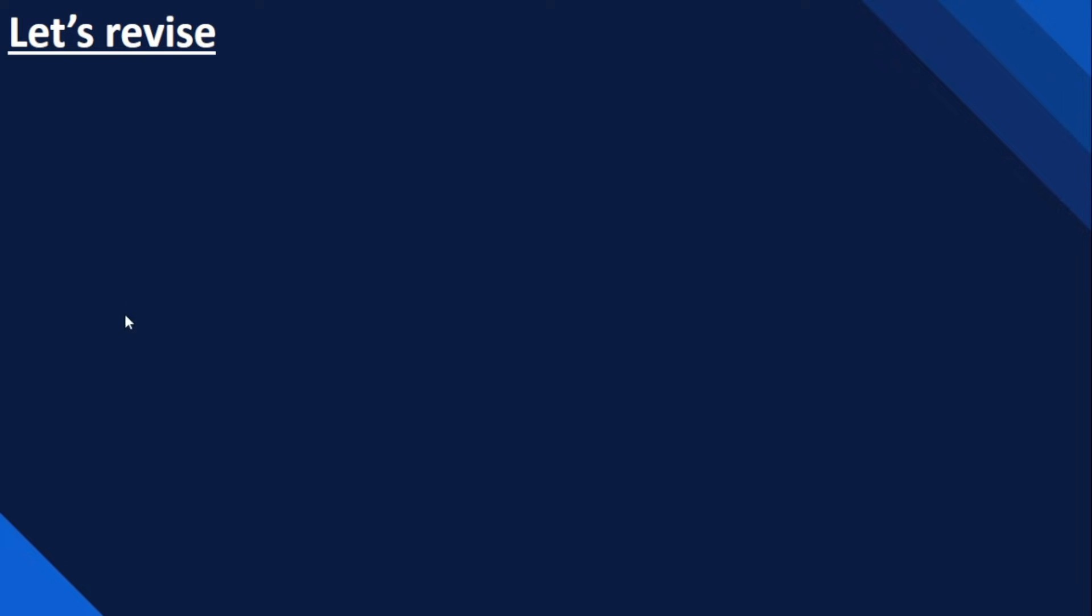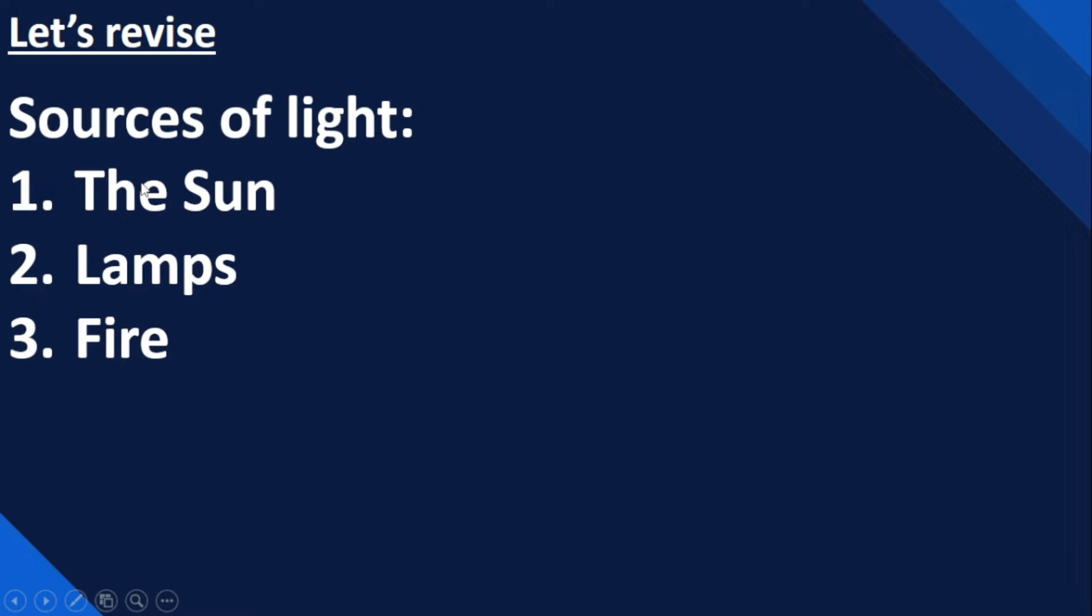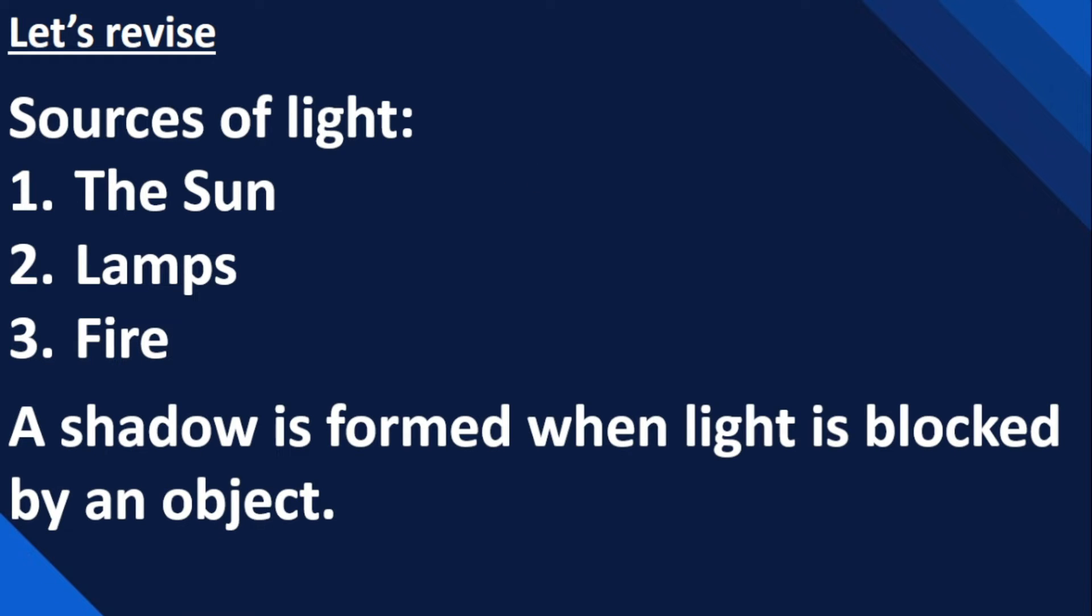Before we start, let us do some revision. In our previous lesson, we learned that sources of light include the sun, lamps, and fire, and also that a shadow is formed when light is blocked by an object. I hope you remember all of this.